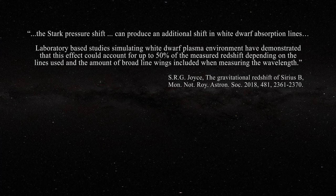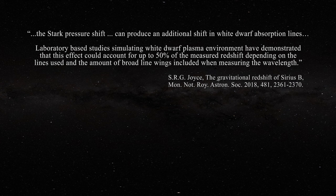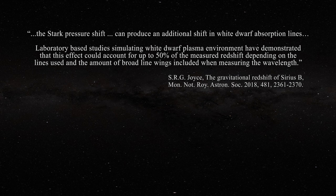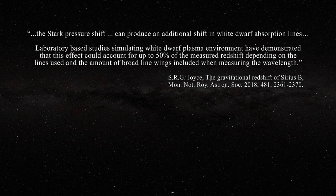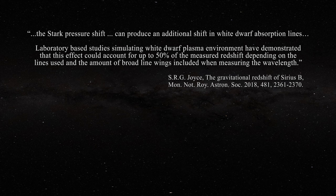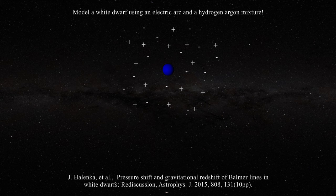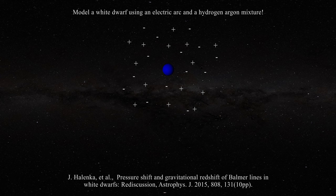You might remember this quote from the last video, where the Stark pressure shift can produce additional shifts in white dwarf absorption lines. Laboratory-based studies simulating white dwarf plasma environments have demonstrated that this effect could account for up to 50% of the measured redshift, depending on the lines used and the amount of broad line wings included when measuring the wavelength. Of course, it is impossible to know the proper conditions in the laboratory to mimic the atmosphere of a white dwarf. This paper models a white dwarf atmosphere in the laboratory by producing plasma using an electrical arc in a hydrogen-argon mixture.